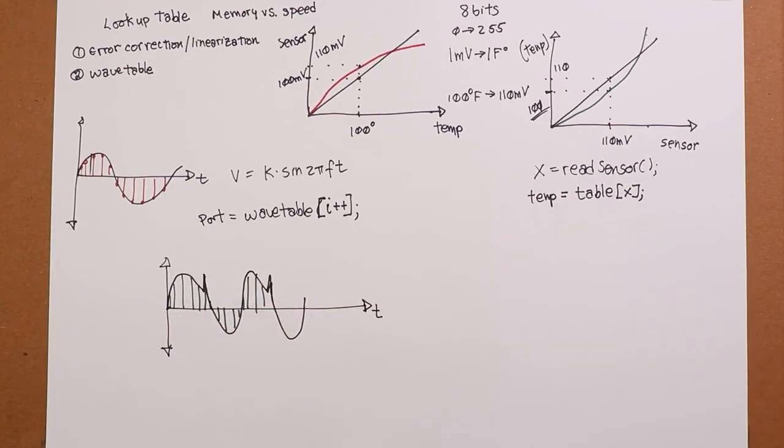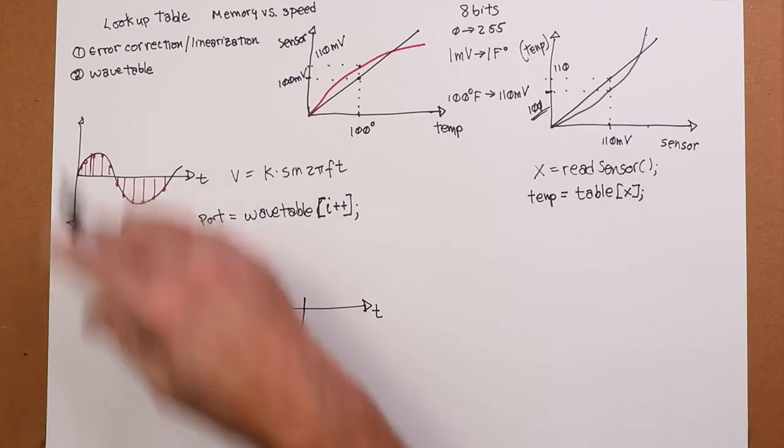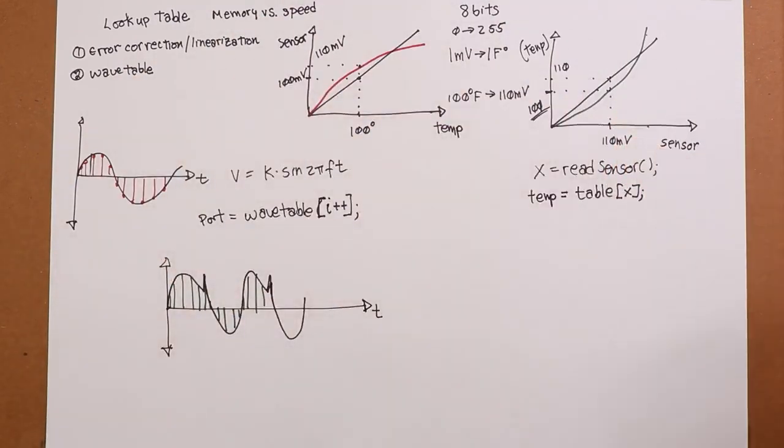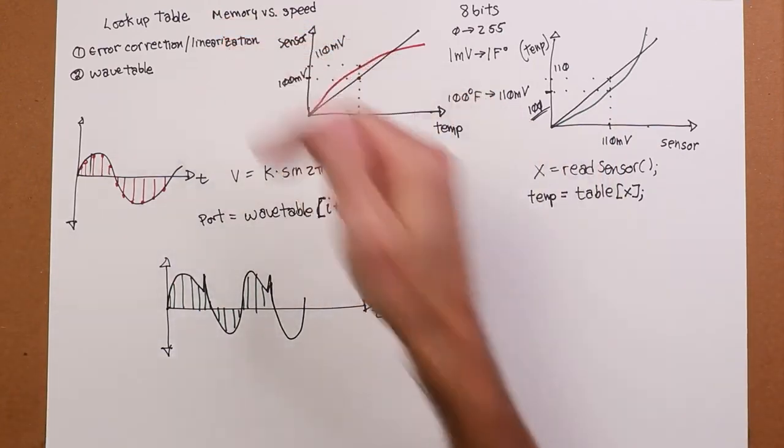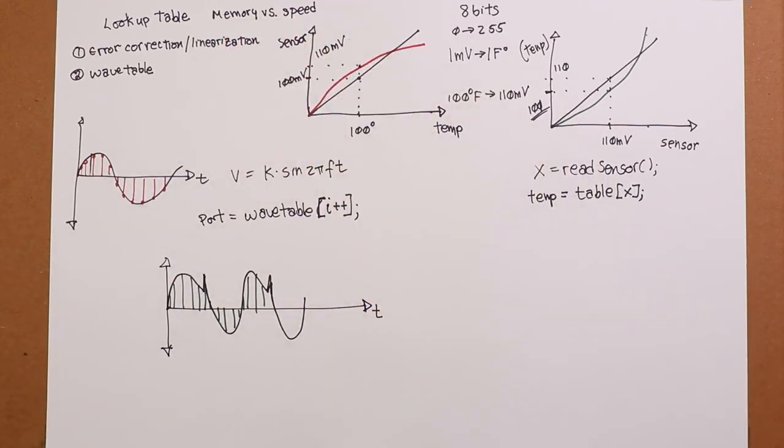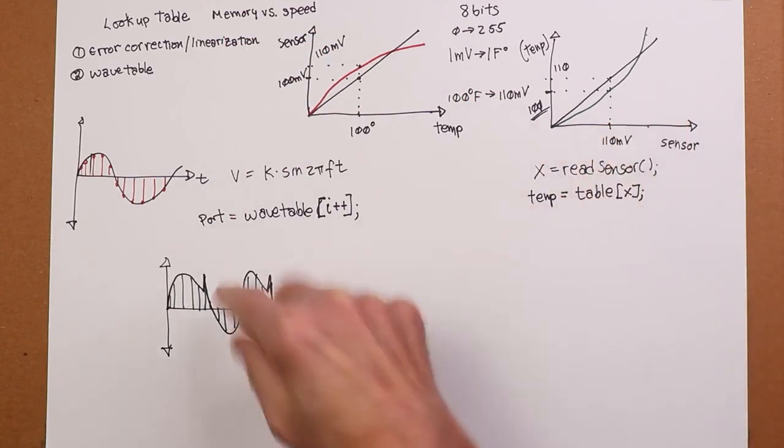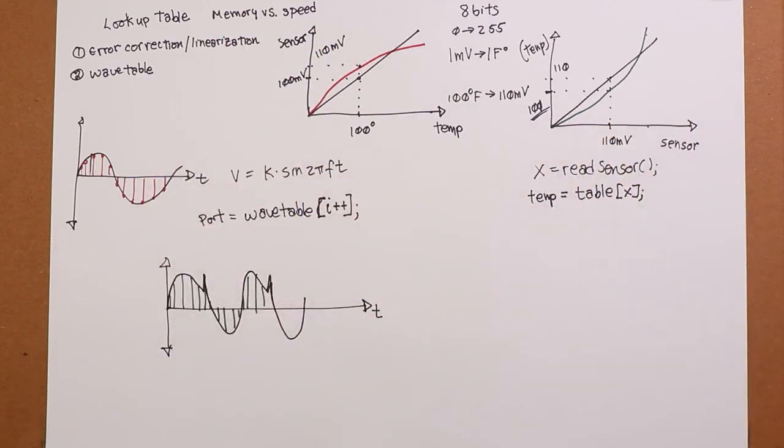All right. Okay. There are some other uses for lookup tables. But these are two really good examples of where you might use it. It's a sort of a common technique, like I said, for error correction and linearization of sensors and something like this, wave table generation. All right. Goody, goody.